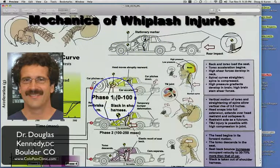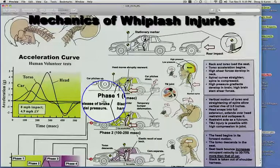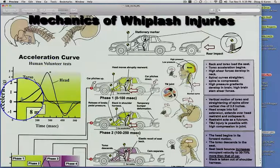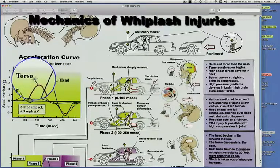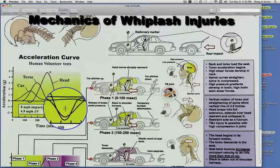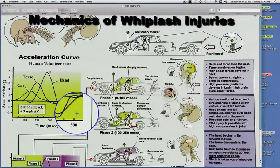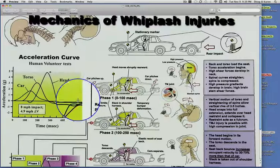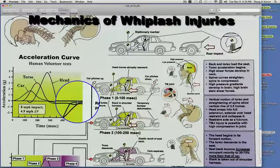What's going to happen in phase one in the first hundred milliseconds—now understand that it takes a thousand milliseconds to equal one second. This image of the whiplash, what happens to the car, the torso of the body, and the head, all occurs in about half of a second, 500 milliseconds. This is very quick. It happens before you can even respond. There's no way you can be bracing for this if you don't know what's going to happen.